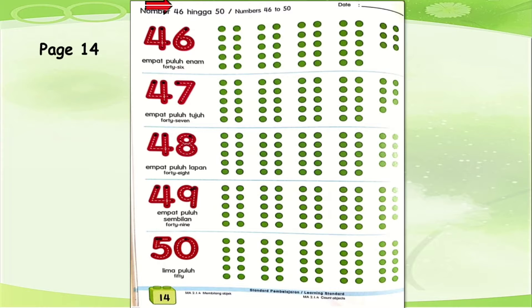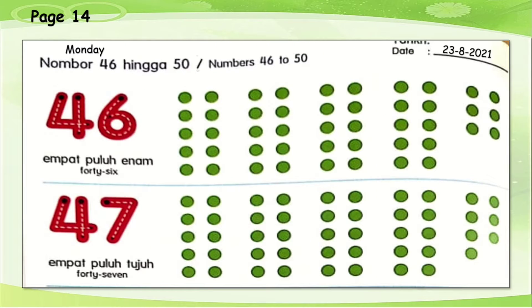Now let's try today's date: Monday, the 23rd of August 2021. Numbers 46 to 50.